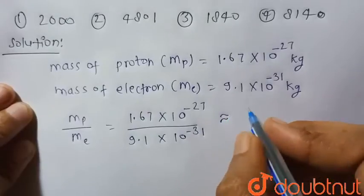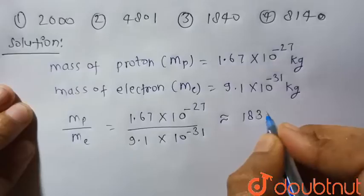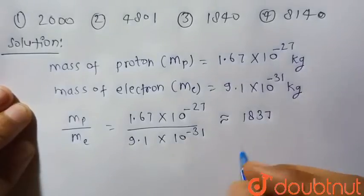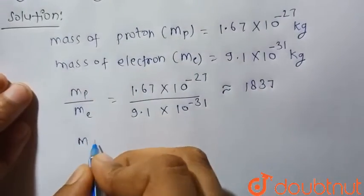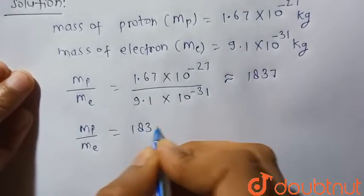After calculating, we will get 1837. So the ratio of mass of proton to the mass of electron is 1837.